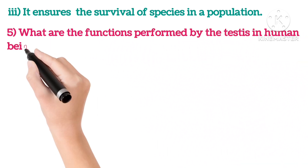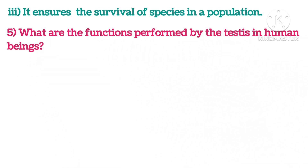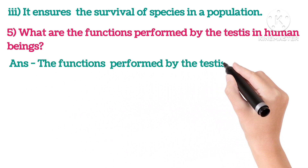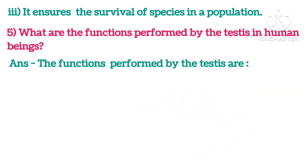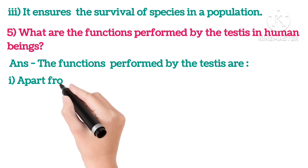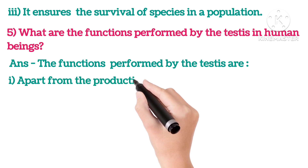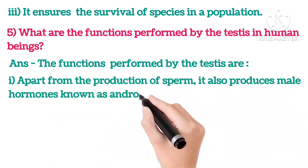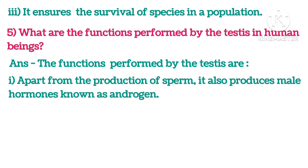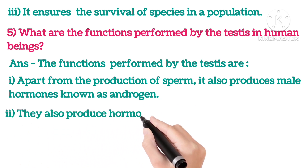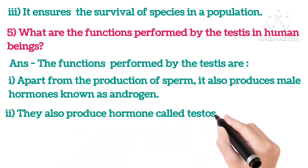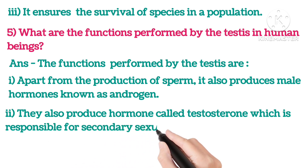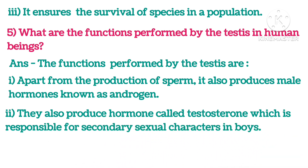Fifth: What are the functions performed by the testes in human beings? The functions of the testes are: Apart from production of sperm, the testes also produce the male hormone known as androgen. They also produce the hormone testosterone, which is responsible for secondary sexual characters in boys.